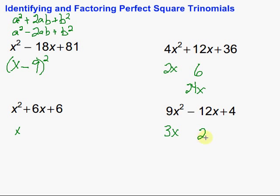Then, 4, is that a perfect square? Yes. Then, we look at the middle term. So, 3x times 2 is 6x. Multiply that by 2 would be 12x. And in this case, we have a minus. So, it's going to be 3x minus 2 squared.